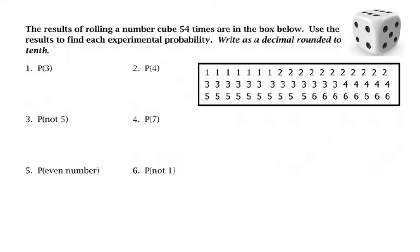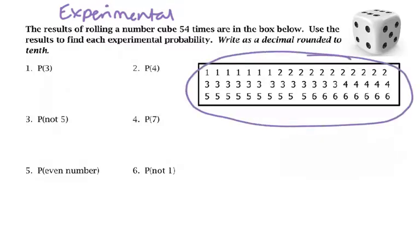The first problem we're going to look at is experimental probability, because we're looking at the results of doing something — specifically the results of rolling a number cube, or dice, 54 times. I sat down and rolled the dice 54 times, and sorted all the answers in order so it's easier to use. We're going to use these results to find the experimental probability.